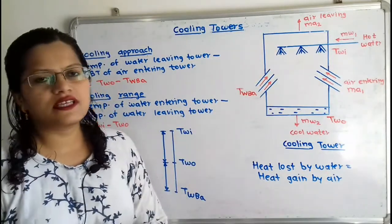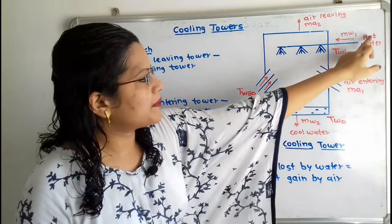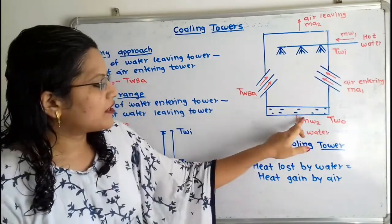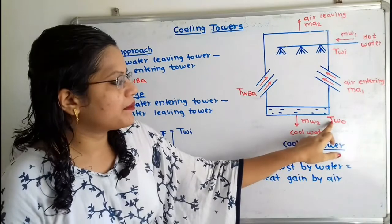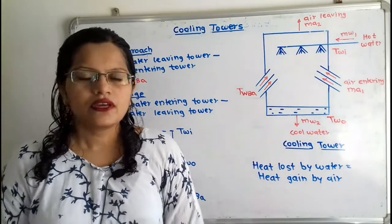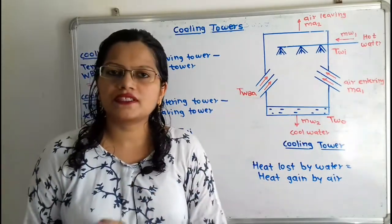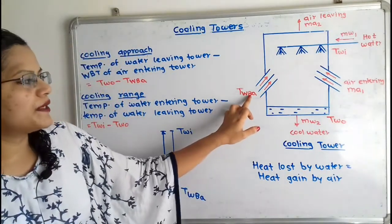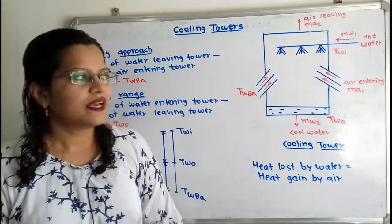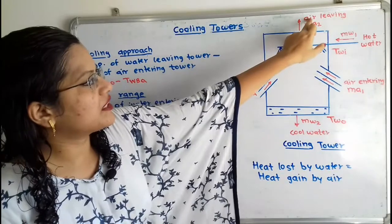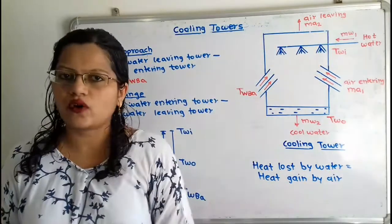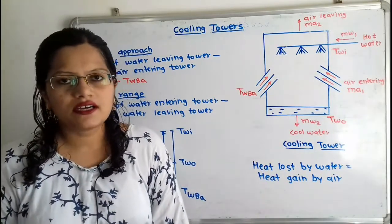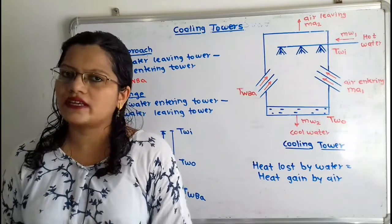If we observe this diagram, the temperature of hot water at inlet is TWI. Then water leaving the cooling tower has temperature TWO. The air has the wet bulb temperature, so we will use TWB, and for air we will use suffix A. Air leaves the cooling tower in the upward direction. This is the working of the cooling tower. Now we will understand the cooling approach and cooling range.